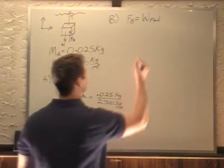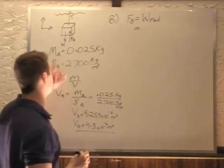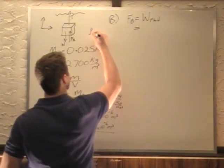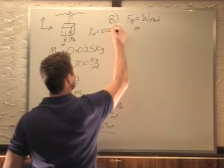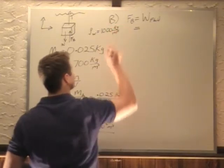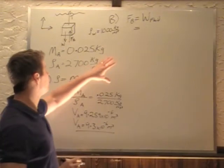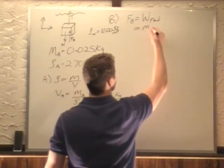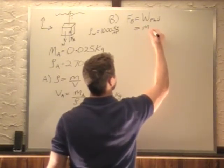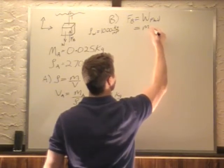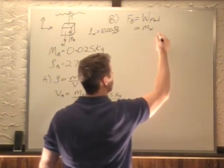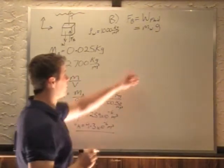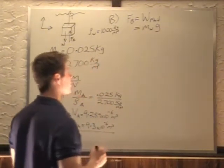We can tell right away, this is water that we're displacing. Water, ρ of water is 1,000 kilograms per cubic meter. The weight of our fluid is going to be W = mg, so the mass of the water displaced times g. That's all we have to figure out now, is the mass of the water displaced.